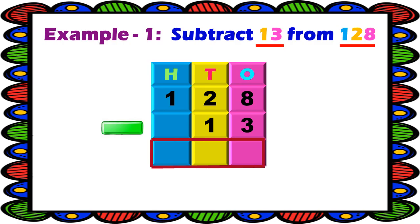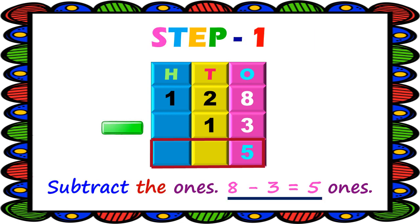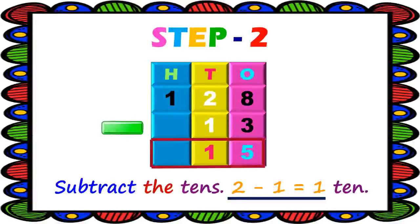Example 1: Subtract 13 from 128. The numbers are already arranged in the column method, so you must do only the subtraction. Step 1: Subtract the ones — 8 ones minus 3 ones, count back: 7, 6, 5. Write 5 in the ones column. Step 2: Subtract the tens — 2 tens minus 1 ten, count back: 1. Write 1 in the tens column.